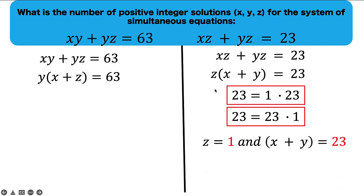This means that since z and the quantity x plus y are factors of 23, then it's either z is equal to 1 and the quantity x plus y is equal to 23, or it is the variable z that is 23 and the quantity x plus y is equal to 1.